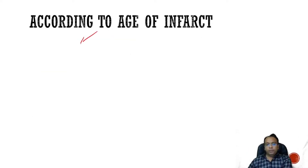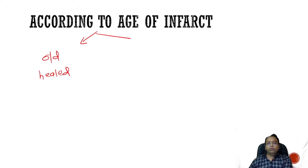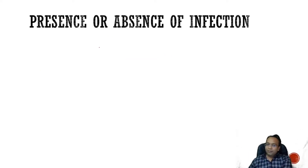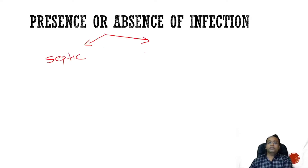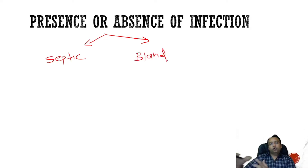According to the age of infarct, it could be an old or healed infarct, or it could be a recent one. According to the presence or absence of infection, it can be divided into two varieties: if it is infected, then it is a septic infarct, and if it is without infection, then it is known as a bland infarction.